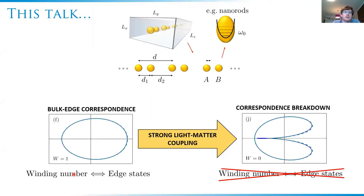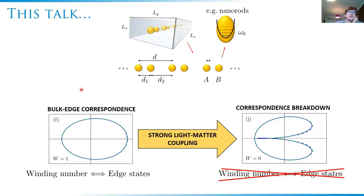This talk is in two parts. The first part is without the light-matter coupling, and in this case the system is very much analogous to the Su-Schrieffer-Heeger model — so not much more than the SSH model but from the perspective of a plasmonic chain. Then things get interesting when we introduce strong light-matter coupling. For the case with no light-matter coupling, there are plasmonic edge states, exponentially localized edge states, and these are in a one-to-one correspondence with a topological index calculable in the bulk.